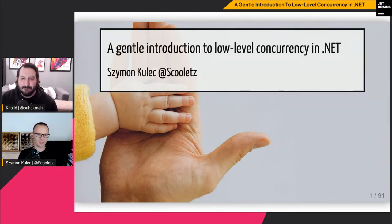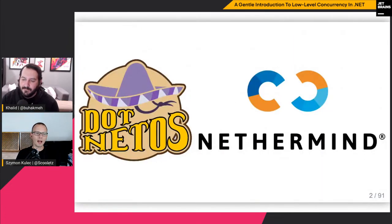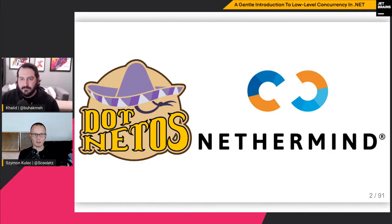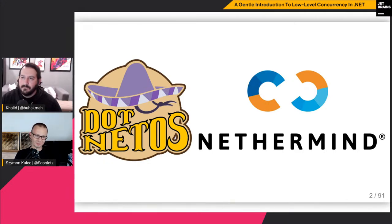So this is a gentle introduction to low-level concurrency in .NET. My name is Szymon Kulec. If you want to follow me, Skulec is my handle on GitHub, Twitter, or anywhere. During this session I'm wearing two hats. One is the .NETOS hat, which is related to understanding .NET — an initiative we co-created to teach what .NET is all about, its intrinsic properties, and with a focus on performance, scalability, and speed.